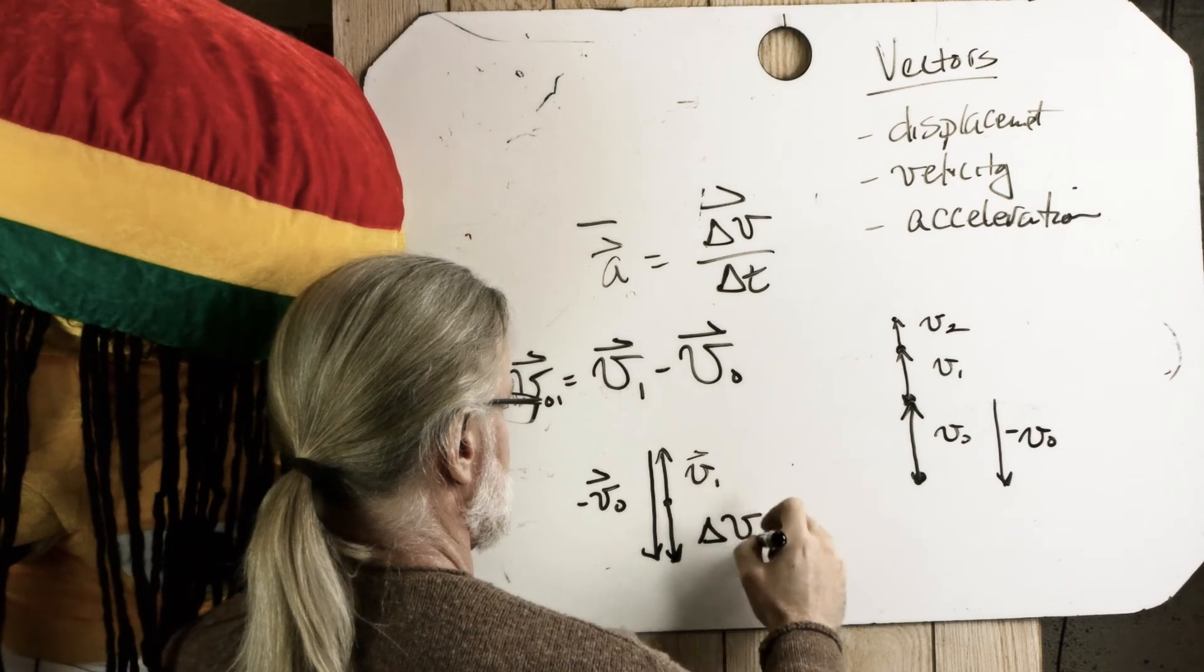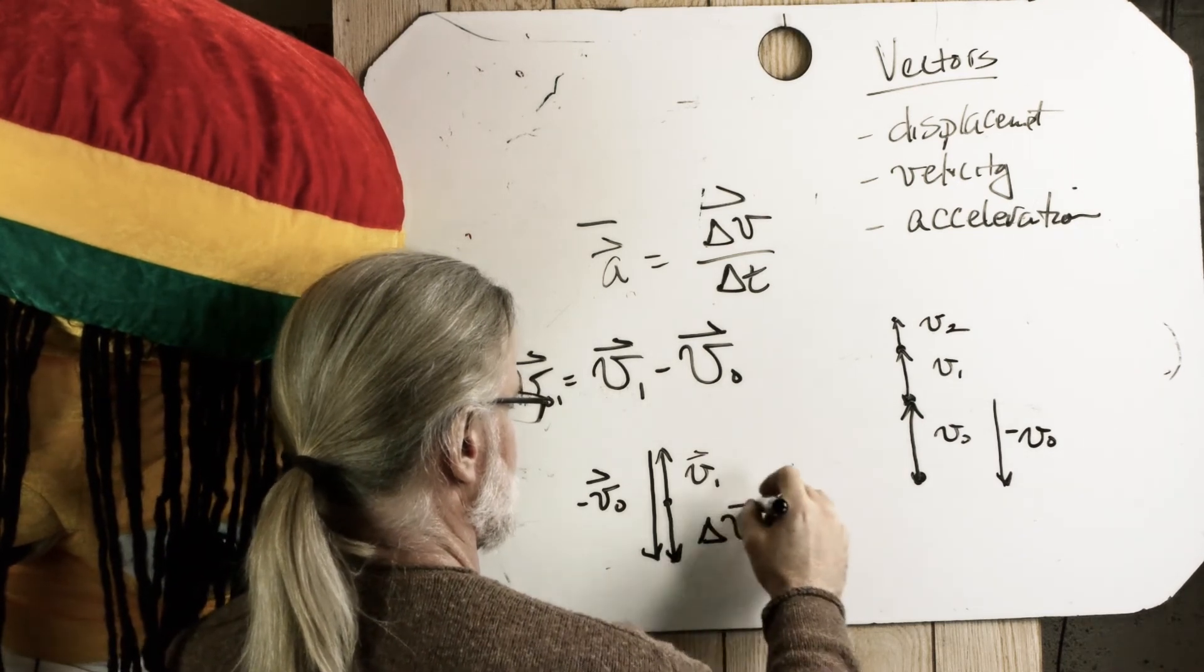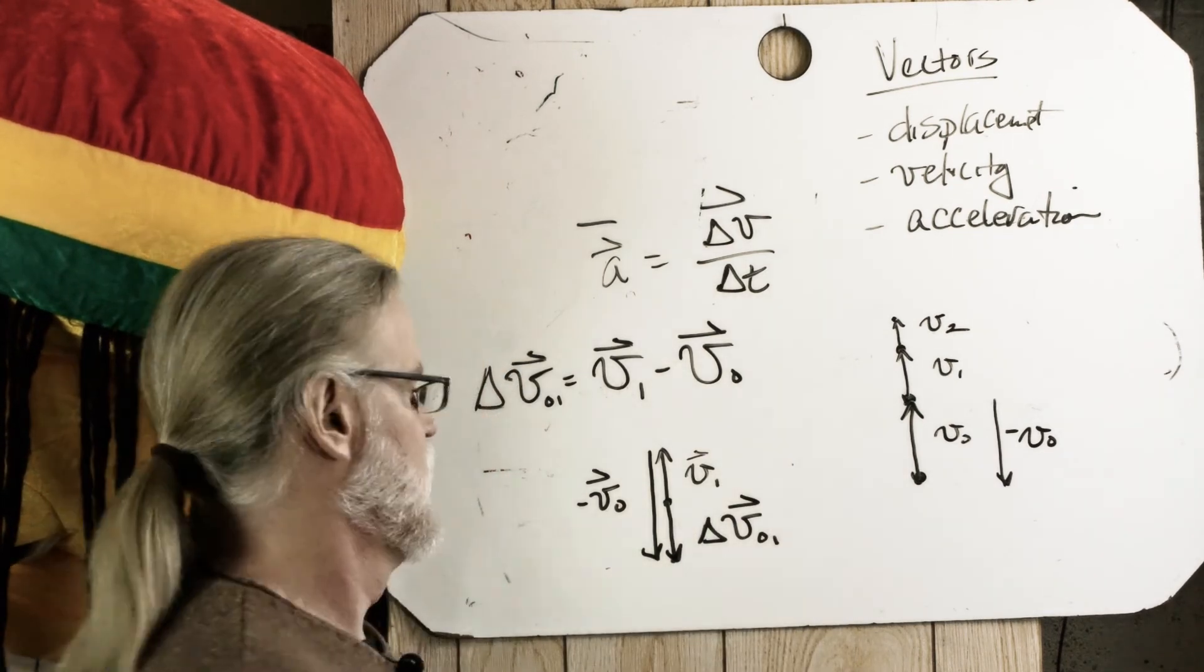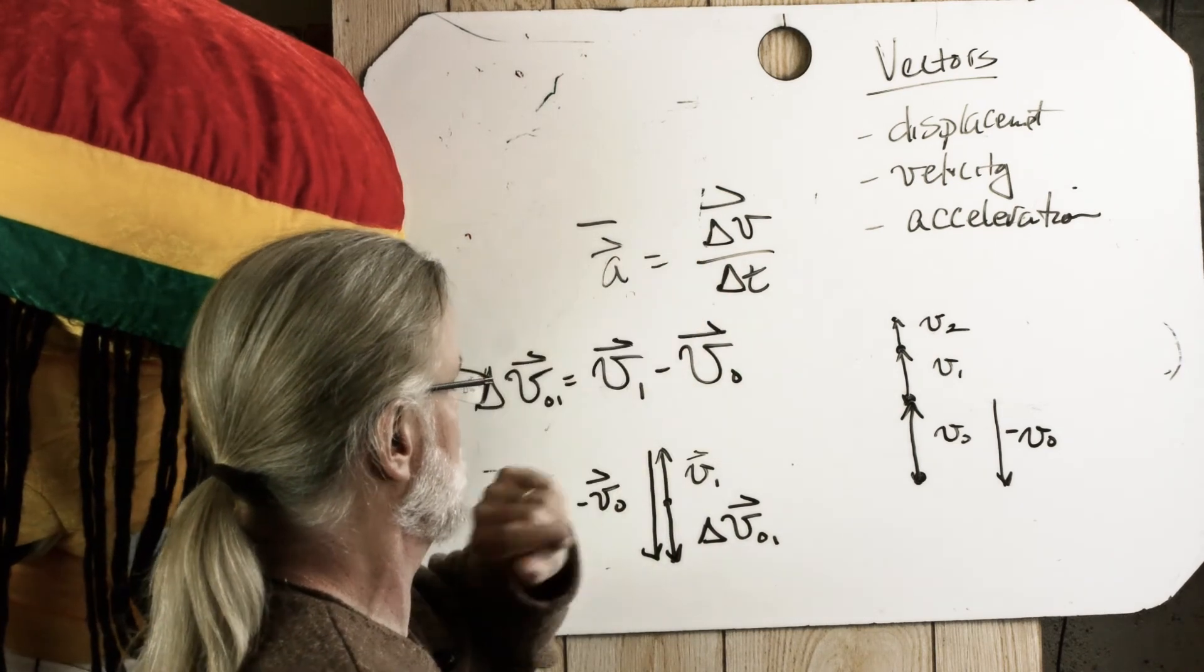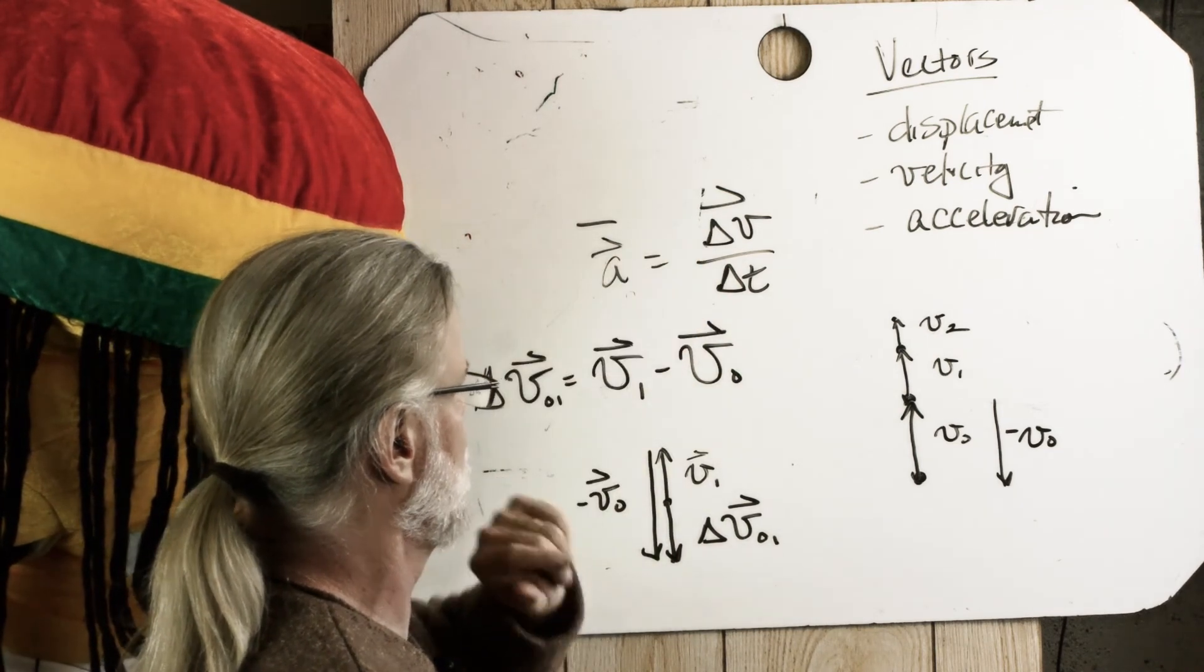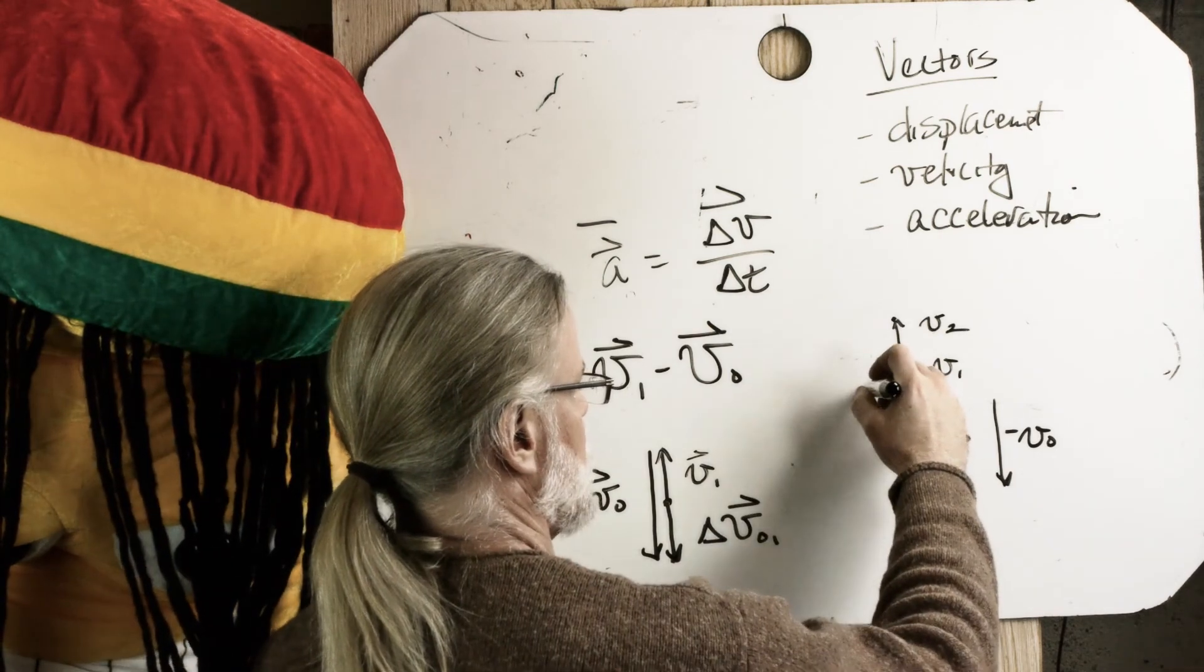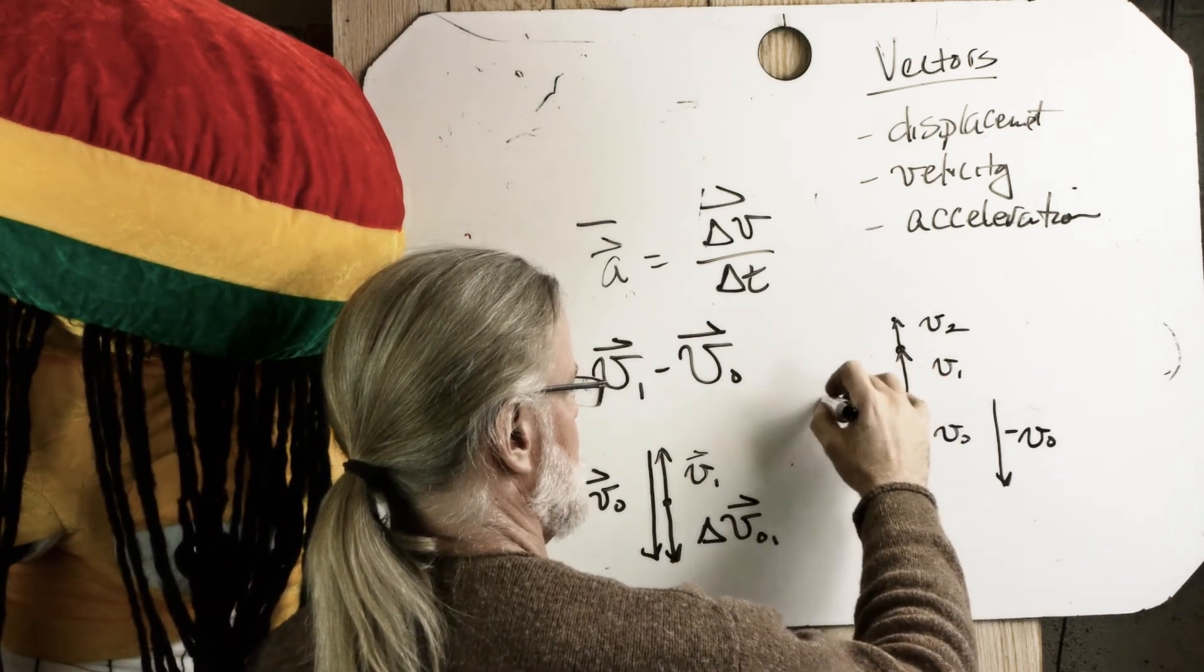Delta V from 0 to 1 is that way. It's down. And the acceleration is in the direction of the delta V. So the acceleration must also be downward.